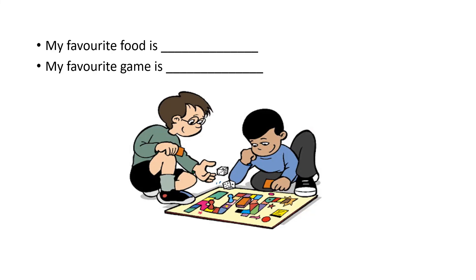After that, say your favorite food and favorite game — whatever they are, you have to say them. Remember: whenever you use the word 'favorite,' always use 'my' — not 'I.' For example: 'My favorite food,' 'My favorite game,' 'My favorite color.' With the word 'favorite,' always use 'my.'